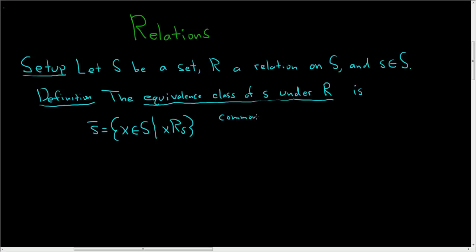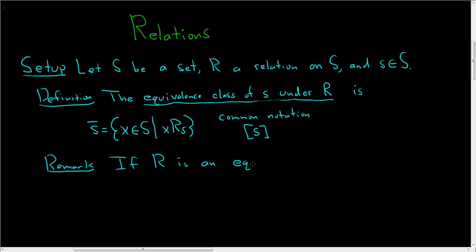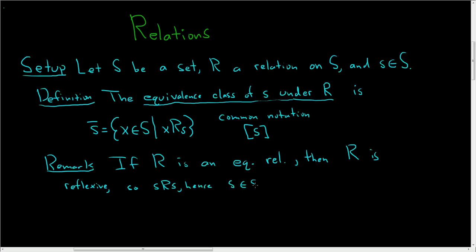There is more common notation often used — people usually use brackets — but I'll stick to the bar notation. A quick remark: if r is an equivalence relation, then in particular r is reflexive, so s is related to s. Hence s is in its own equivalence class, meaning the equivalence class of s is non-empty. Reflexivity guarantees that s is in its own equivalence class.